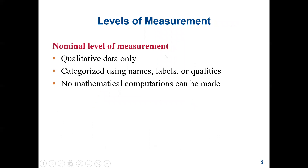Next we have the level of measurements. We have four types: nominal, ordinal, interval, and ratio. The nominal level of measurement consists of qualitative data entries, normally categorized using names, labels, or qualities. At the nominal level, we cannot perform arithmetic operations except counting — no mathematical computations can be made.